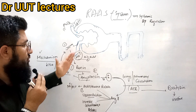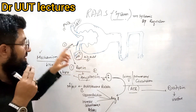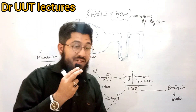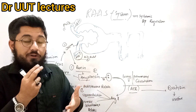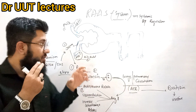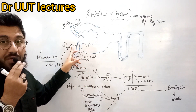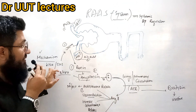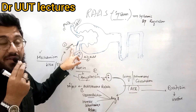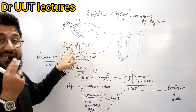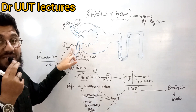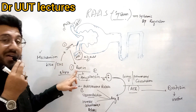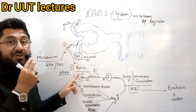Blood is supplied through the afferent arterioles. Now, these juxtaglomerular cells have the special ability to detect sodium concentration in the blood. When they detect low sodium concentration, these cells are stimulated and they release renin.